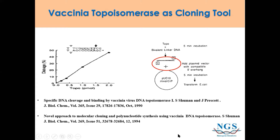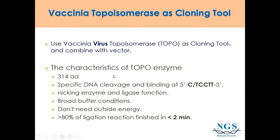Vaccinia virus topoisomerase I can be used as a cloning tool combined with a vector. Here are some characteristics of the topoenzyme: it has 340 amino acids, with specific DNA cleavage and binding at the 5'-N(C or T)CCTT sequence. It has nicking enzyme and ligase functions, can be used in rough buffer conditions, does not require outside energy, and more than 80% of the ligation reaction can be finished within two minutes.